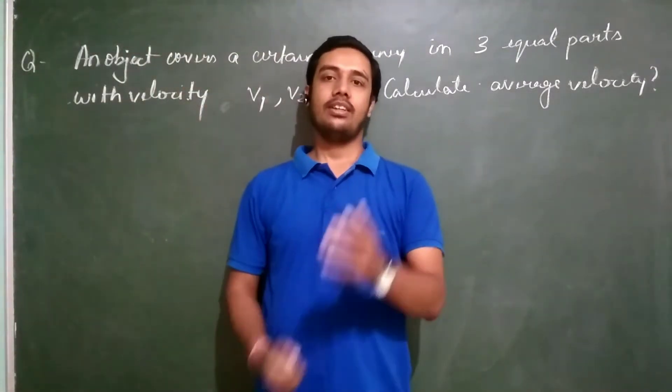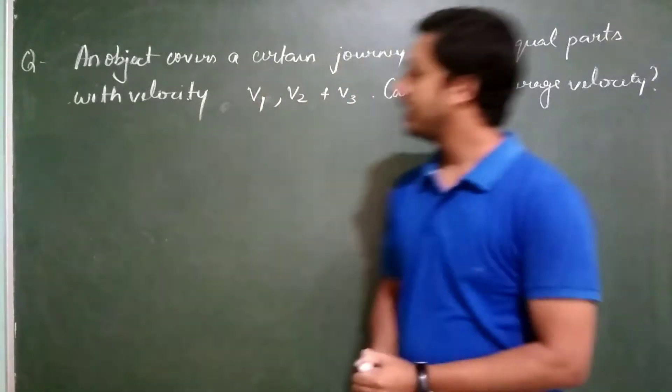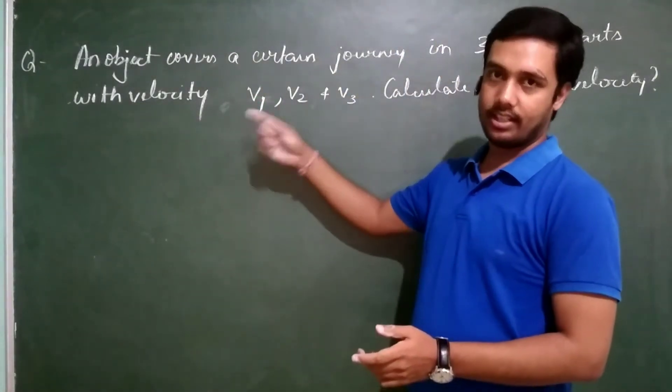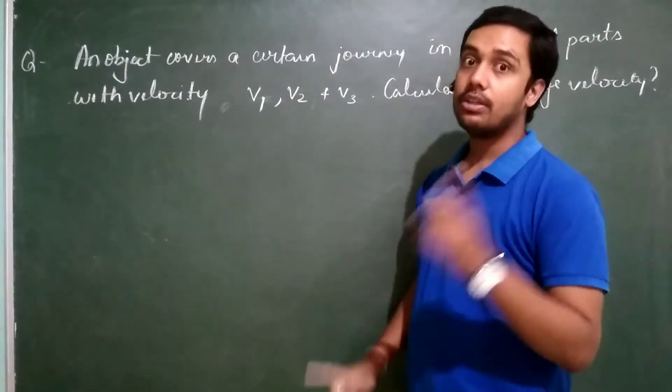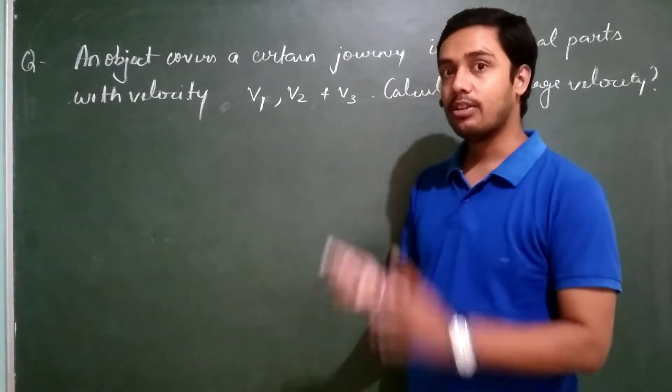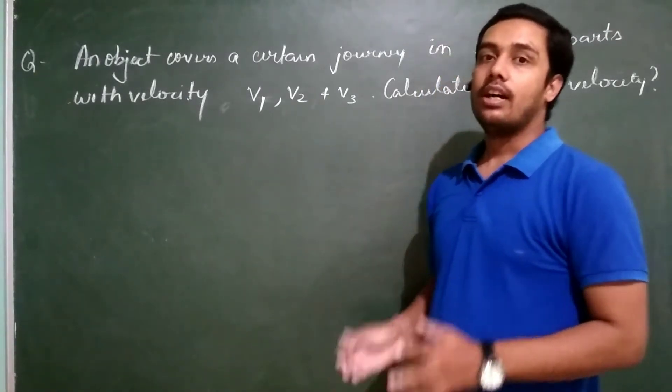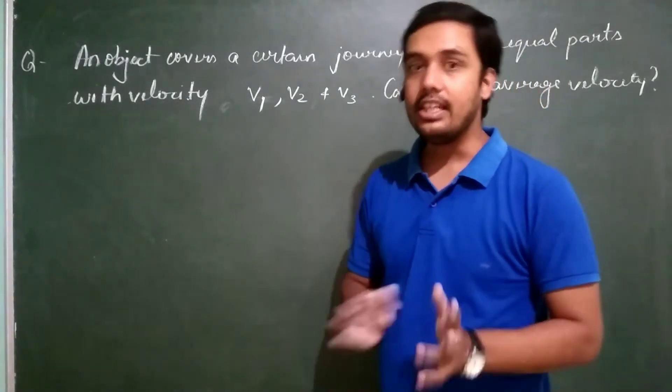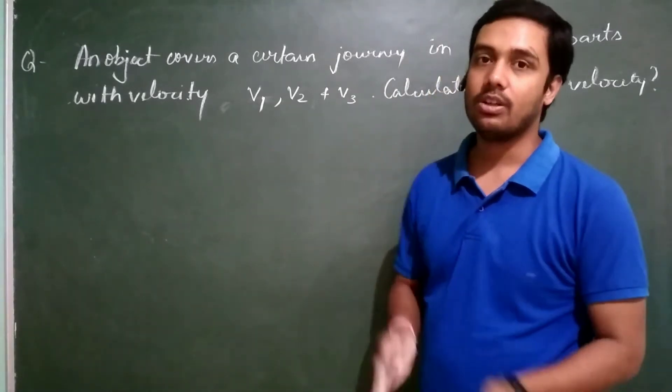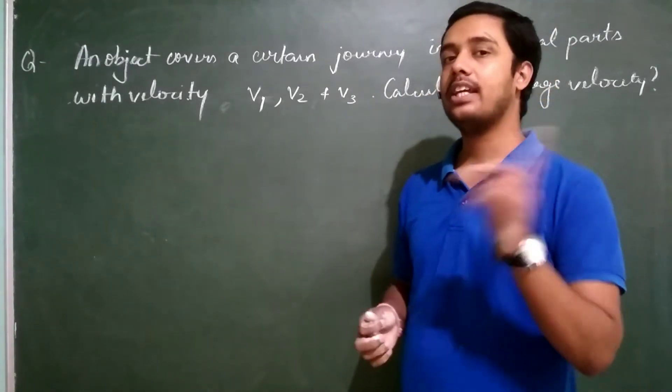Good morning students, again we are back and this time we are dealing with another question related to the question we have done previously when the object covers a certain distance with equal half of journey with velocity v1 and v2 and we calculated the average velocity.